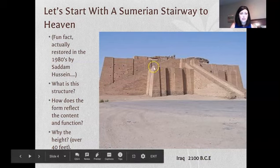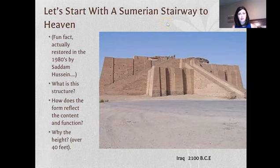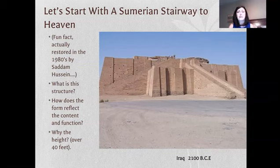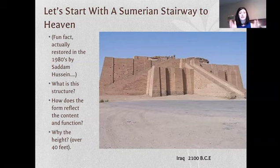These ziggurats really connect the two R's that this unit is about: religion and rule. They're made out of local materials — in this area, mud brick — because the Sumerians weren't yet expanding outward. You build with what you have. The fact that these structures are still standing says the engineering was pretty impressive.